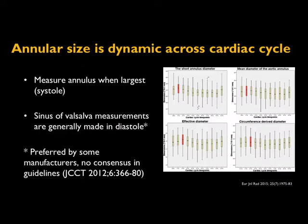There has been a lot of work done to determine when in the cardiac cycle one should measure the annulus for TAVR sizing. Ideally you want to measure when the annulus is the biggest, since we're more worried about putting in a valve that's too small. It turns out that systole is where you get the largest annular measurements, though the variation is fairly substantial — the error bars are quite wide.